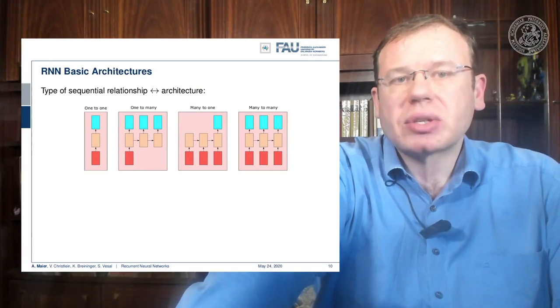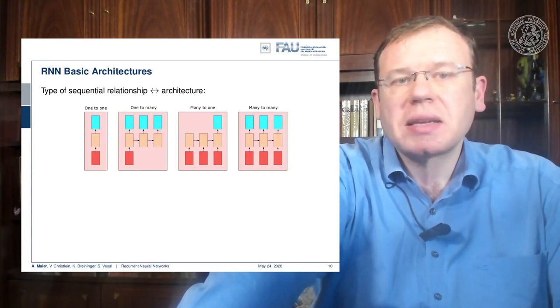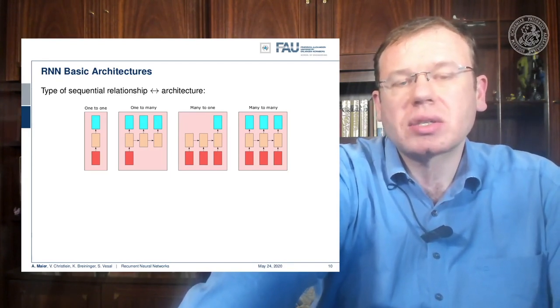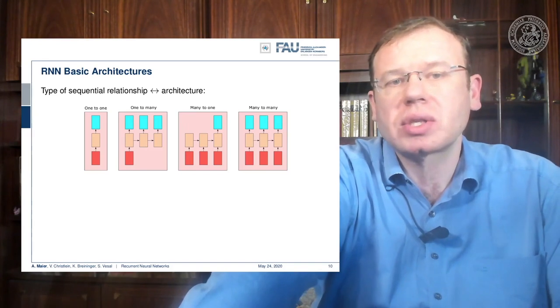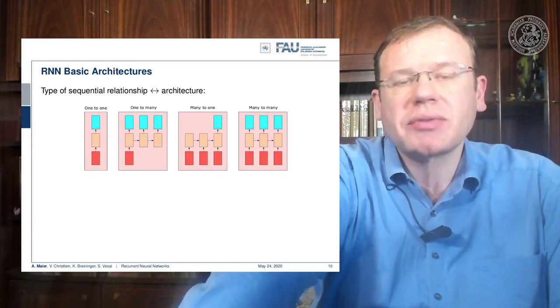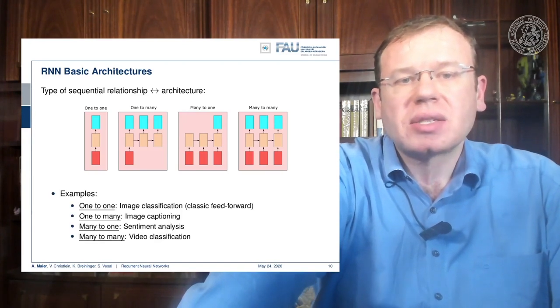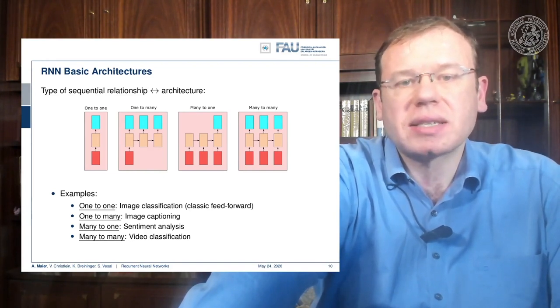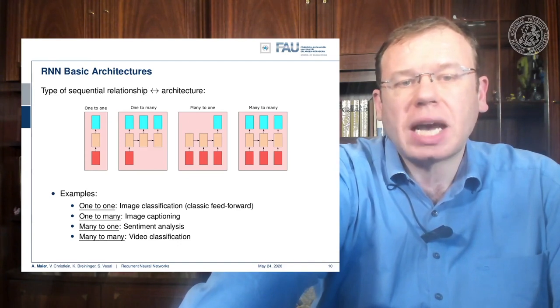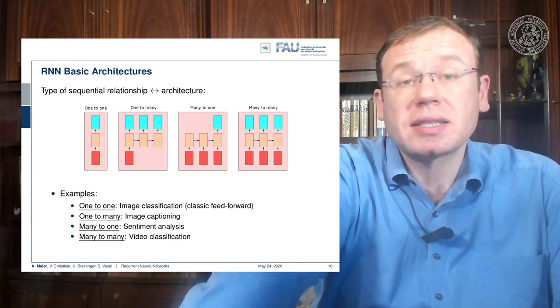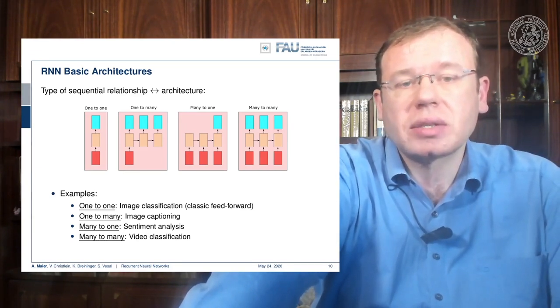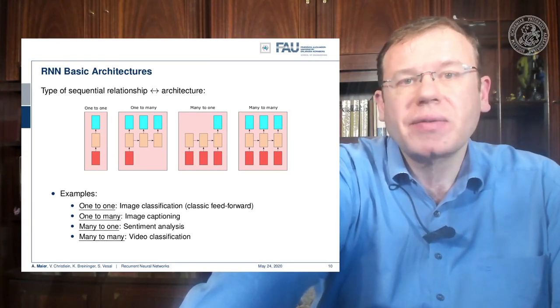If we stick to this architecture, we can then essentially realize many different types of architecture. And this is determined by the setup of the architecture. So we can do one-to-one where we have one input cell and essentially one output cell, but you can also do one-to-many or many-to-one, or you can even do many-to-many. So examples would be one-to-one is image classification. It's essentially classic feedforward. One-to-many would be image captioning. Many-to-one would be sentiment analysis where you need to observe a certain sequence in order to figure out what sentiment is going on in this situation, or many-to-many like video classification.